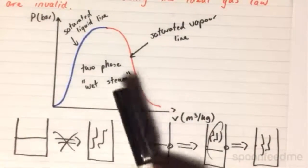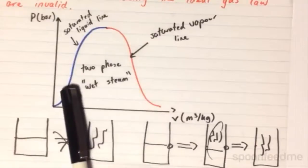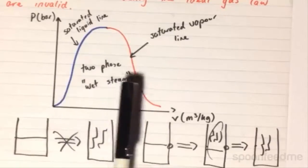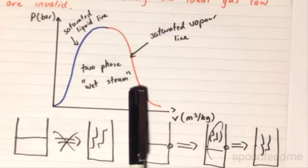And the closer you are to the saturated liquid line, you will find that there is a higher percentage of liquid in the mixture. And the closer you get to the saturated vapor line, you will find that higher the percentage of vapor in the mixture.